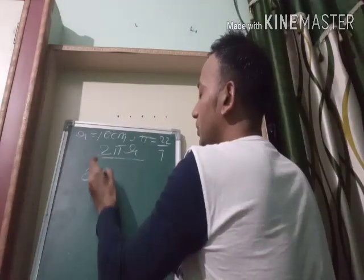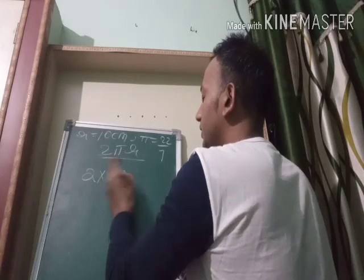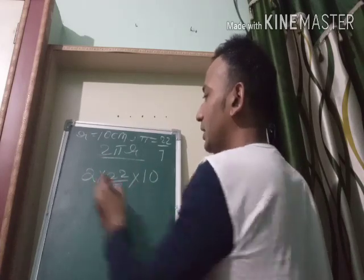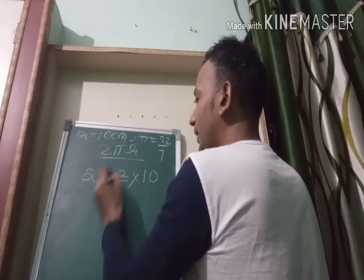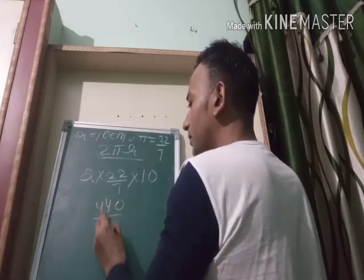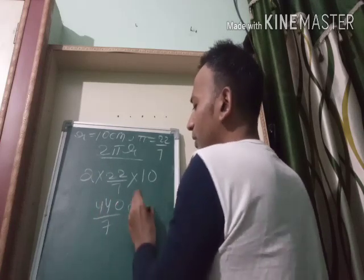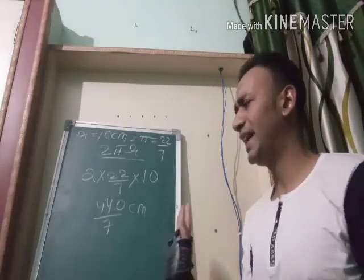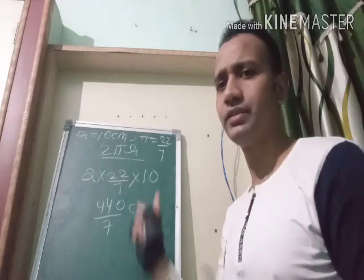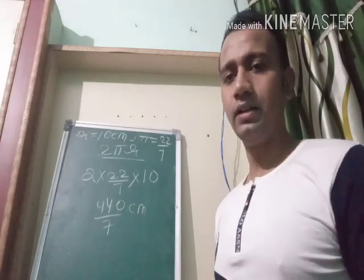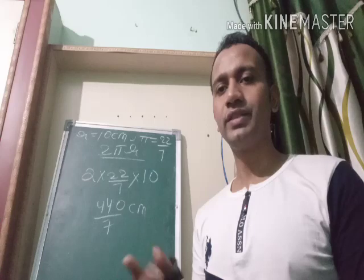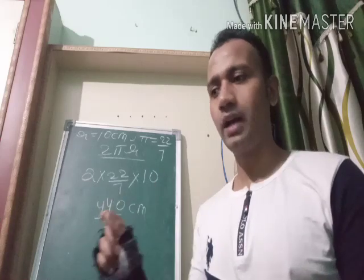On putting the values, pi becomes 22 upon 7 and R is 10. So 2 × 22/7 × 10 gives 440 upon 7. You can also convert it to decimal form, but I am leaving it as is. So 440/7 is the circumference of the circle. The formula for circumference of a circle is 2πr.